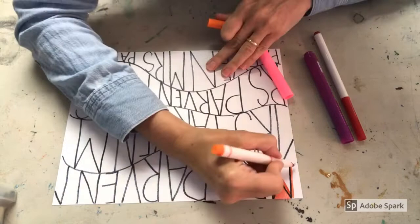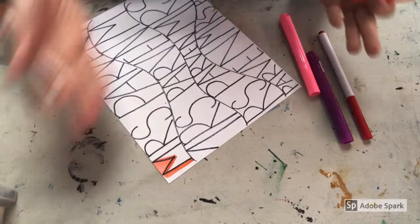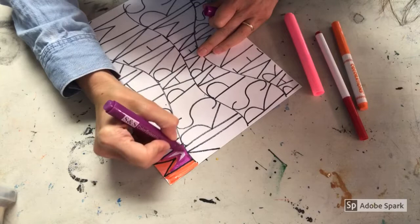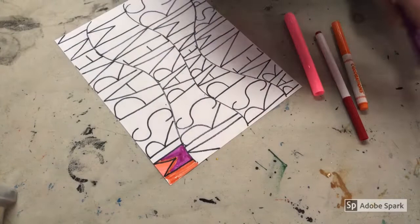Really there are no rules because this is going to turn into an abstract design. You could add some water and flick it out, that would be kind of cool. You could have some solid blocks of color. Notice I'm using careful coloring where I'm outlining and then filling it in like this. Just really have fun with it.